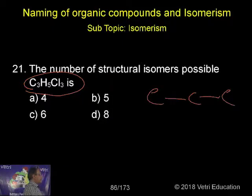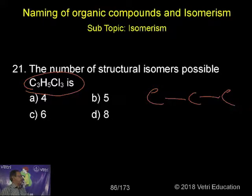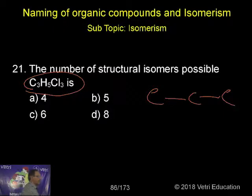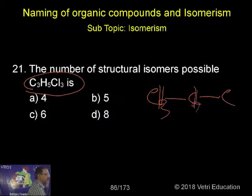Instead of Cl₃, if you assume three hydrogens, it would be C₃H₈, which fits the CₙH₂ₙ₊₂ formula for an alkane. So the base structure is a three-carbon chain.